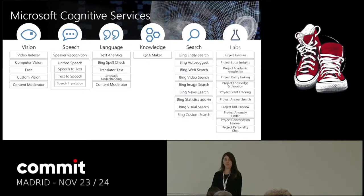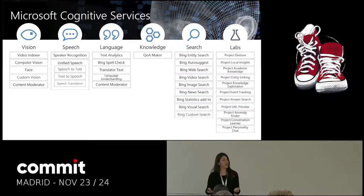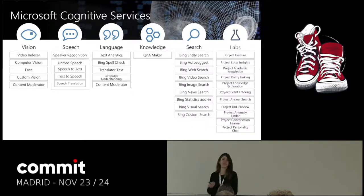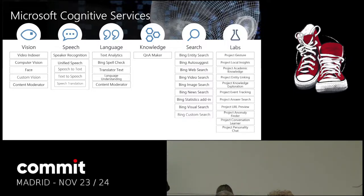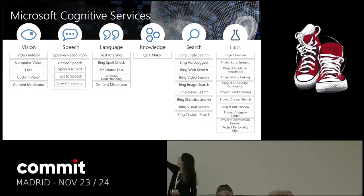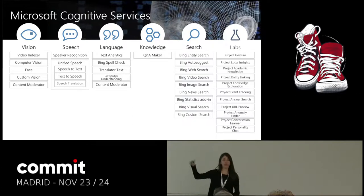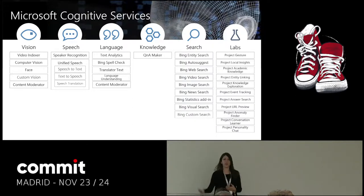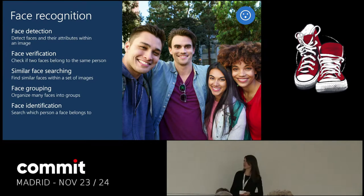In each category there are several APIs. I think the best way to see each API is to do a demo and see it live — how does it work, what does it give us? I'm going to talk about most of the APIs in the first four categories, mention one from search, and I won't mention labs, but if you want to be one of the first to try the new services, you can go to labs.